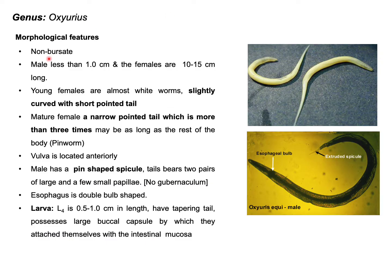Regarding morphological features of the genus Oxyurius: these parasites are non-bursa parasites, meaning the male parasite does not have a bursa. The male parasite is around one centimeter in length and the female parasite is around 10 to 15 centimeters in length. The female is almost white in color, with a curved body and a pointed tail — which is why this parasite is also known as pinworm. The vulva is located anteriorly.